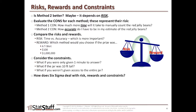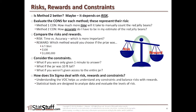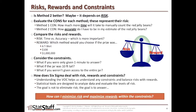So how does Six Sigma actually deal with the different risks, rewards, and constraints involved? Understanding the voice of the customer, or VOC, gives us an understanding of the constraints in the situation we're trying to evaluate, and a better understanding of all the risks and rewards involved and how to balance and account for them. Statistical tools used later in the analyze phase are designed to analyze data and evaluate those levels of risk. The goal, I believe, is not to completely eliminate or mitigate risk, but to answer: how can I minimize the risk and maximize the rewards within my given constraints? That is the primary question we're trying to answer by doing statistical analysis.